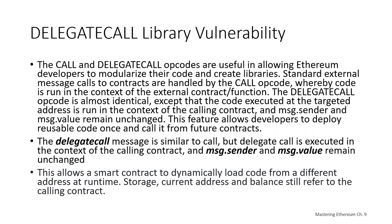The delegate call operation code is almost identical to call, except that the code executed at a targeted address is run in the context of the calling contract, and the message sender and the message value remain unchanged. That delegate call feature allows developers to deploy reusable code once and call it from future contracts, essentially creating libraries.